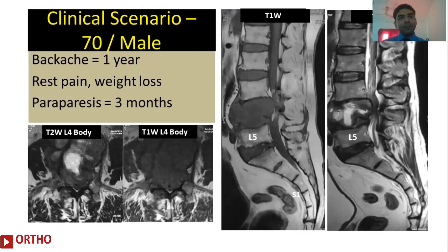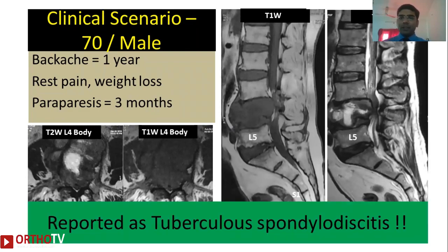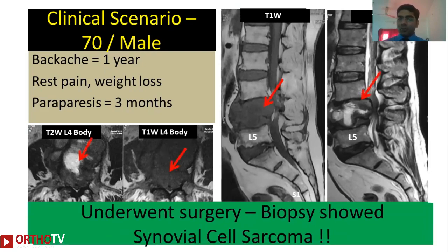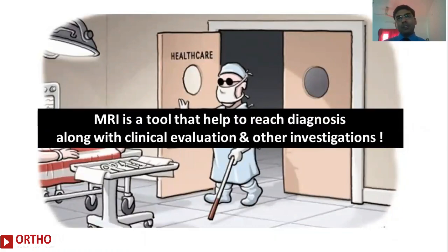Another clinical scenario: a 70-year-old male having back pain for a year started developing lower limb weakness. He got an MRI at a remote center in India where the radiologist said infection was more likely and neoplasm was less likely. Without taking any biopsy, the treating surgeon put him on anti-tuberculous treatment. His condition kept worsening, and when he came to us he had cauda equina syndrome requiring emergency surgery. The intraoperative biopsy showed a signet cell carcinoma. This would have been picked up earlier if a biopsy had been done at the appropriate time. MRI is a tool that can help you reach a diagnosis, provided you use it properly along with other investigations and a thorough clinical evaluation.